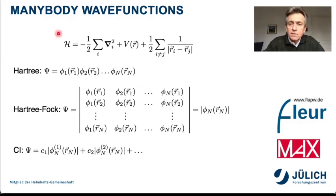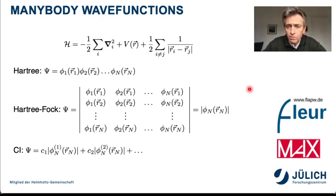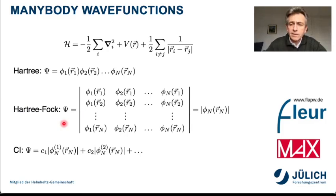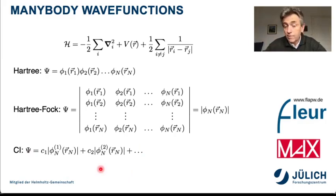In all these theories we want in the end to solve a many-body Schrödinger equation, and in the quantum chemical world there are some simple approximations for that. For example the Hartree approximation, where you make a product ansatz for the many-body wave function. Then there is the Hartree-Fock method, where you use a determinant ansatz to incorporate the Pauli principle, and you can also make linear combinations of determinants in configuration interaction methods, and of course many things beyond that.